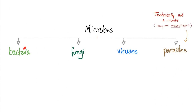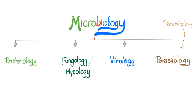As you know, microbes are either bacteria, fungi, viruses, or parasites. But technically, parasites has a different science - it's not microbiology, it is parasitology. Why different? Because many parasites are macroscopic, not microscopic. Case in point, Ascaris lumbricoides. So the science is called microbiology, and it has bacteriology, mycology to study fungi, virology, and parasitology.